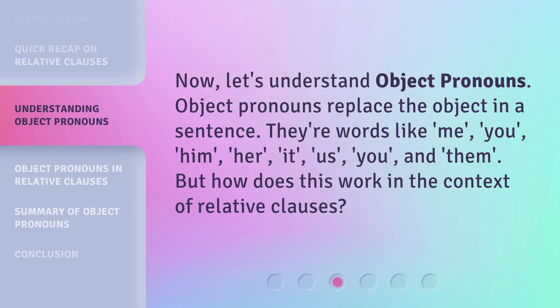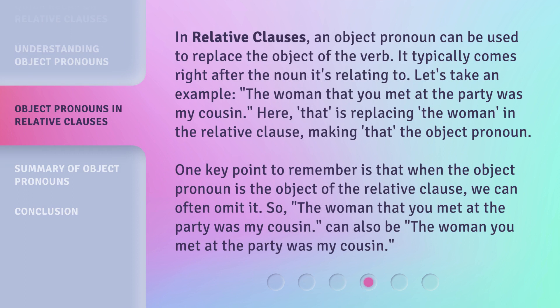But how does this work in the context of relative clauses? In relative clauses, an object pronoun can be used to replace the object of the verb. It typically comes right after the noun it's relating to. For example: 'The woman that you met at the party was my cousin.' Here, 'that' is replacing 'the woman' in the relative clause, making 'that' the object pronoun.